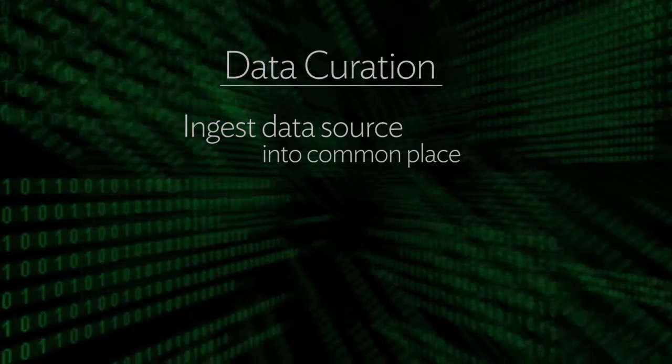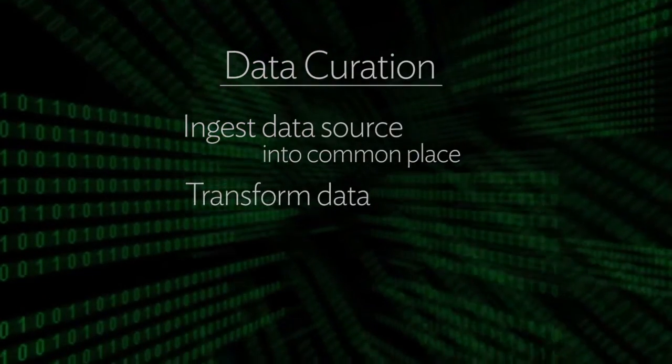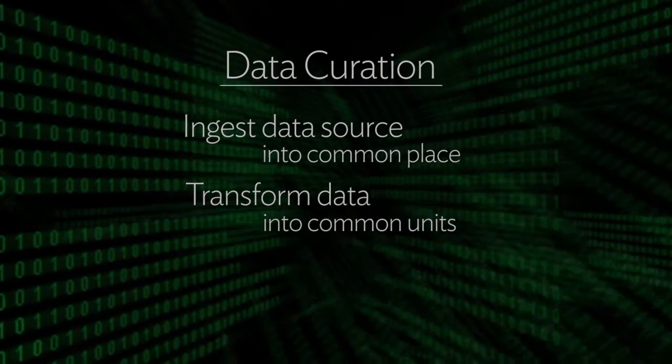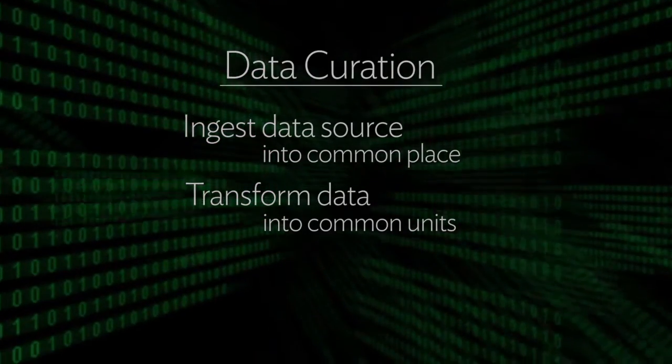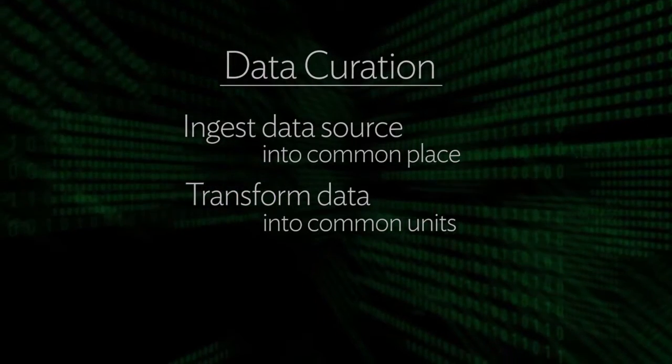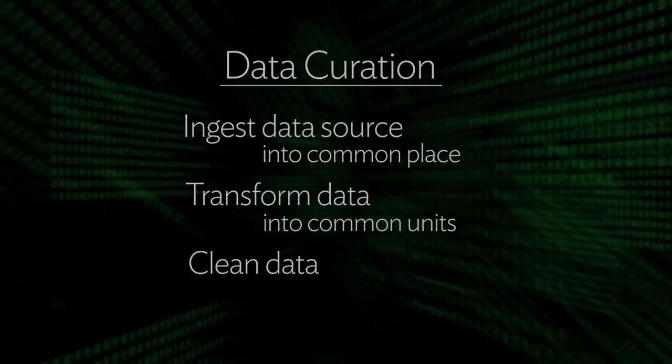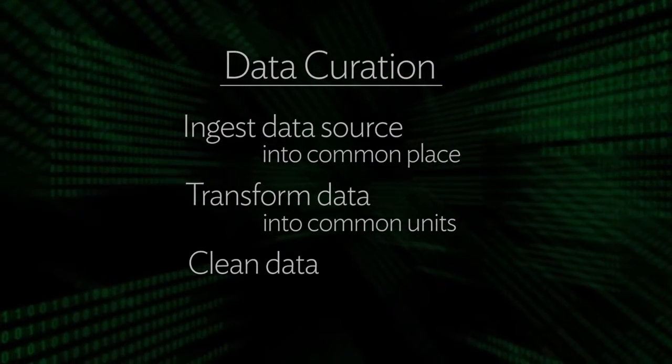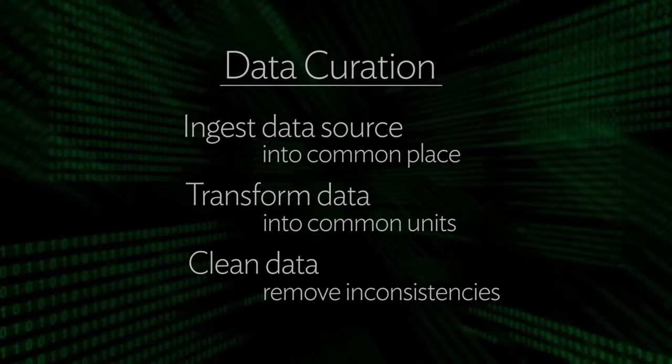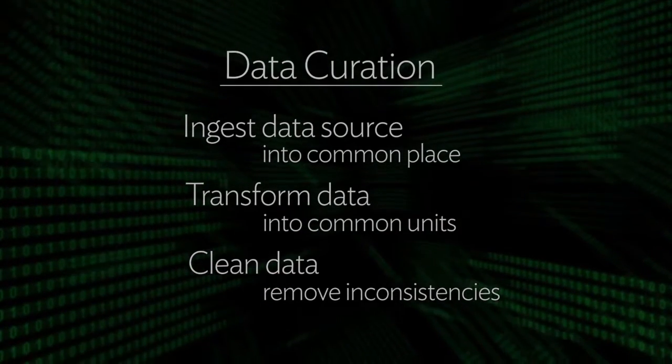When you do data curation, you first have to ingest the data from wherever it is into some common place. Often you have to transform it into common units — euros to dollars, meters to feet, or whatever. You then have to clean the data, because when you look at the data sources separately they look fine, but when you put them together you start to see inconsistency — like putting the wrong zip code to the wrong address, or the wrong telephone number to the wrong company.